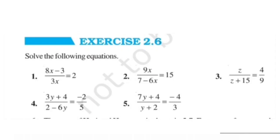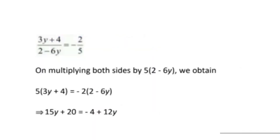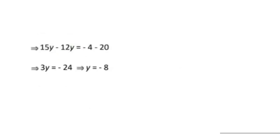Question number 4: (3y plus 4) upon (2 minus 6y) is equal to minus 2 upon 5. By cross multiplication: 5 times (3y plus 4) equals minus 2 times (2 minus 6y). Opening brackets: 15y plus 20 equals minus 4 plus 12y. Writing variables separately: 15y minus 12y equals minus 4 minus 20, so 3y equals minus 24, meaning y is equal to minus 8.